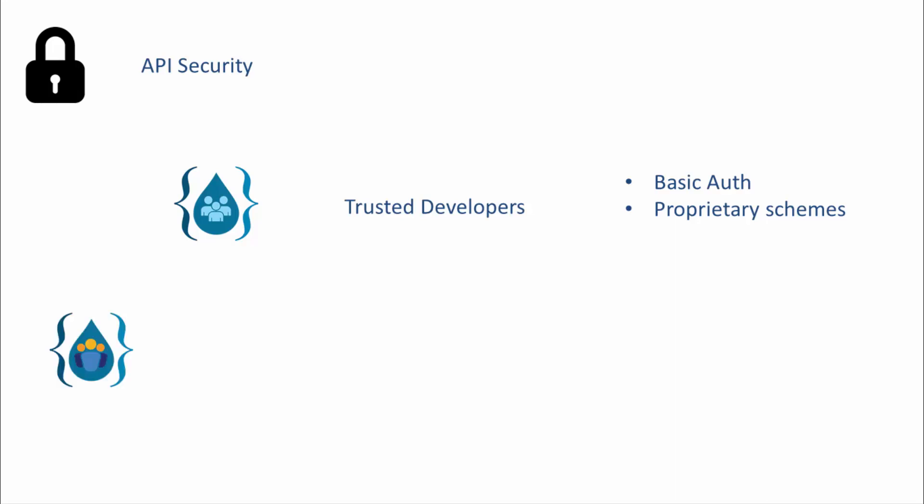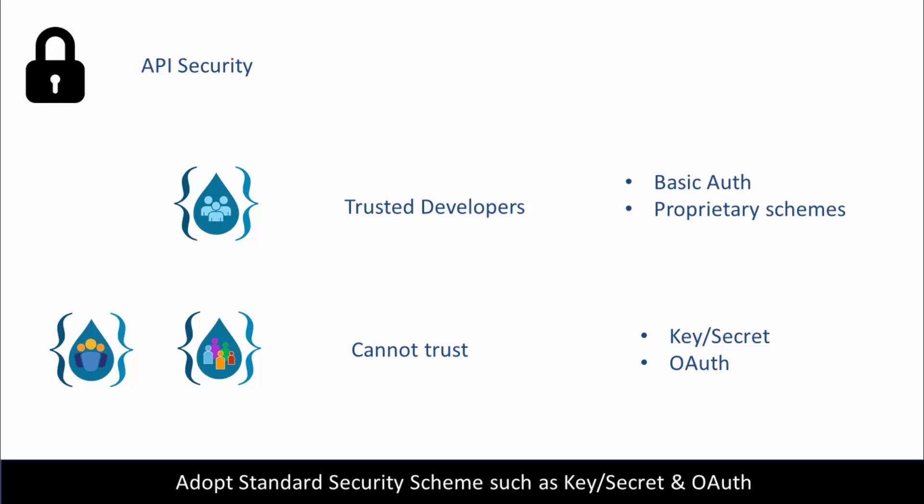In the case of a partner API or a public API, you cannot trust the developers or the API consumers. In that scenario, you have to use stricter forms of security such as key secret or OAuth. In fact, you should adopt a standard security scheme such as key secret and OAuth for all your APIs. I'll be covering API security in a dedicated section on security.